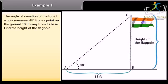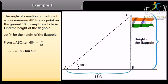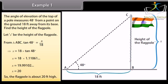Example 1: Let's solve some examples to understand better about angle of elevation and depression. The angle of elevation of the top of a pole measures 48 degrees from a point on the ground 18 feet away from its base. Find the height of the flagpole. Let's first visualize the situation. Let x be the height of the flagpole. From triangle ABC, tan 48 degrees equals x upon 18, which implies x equals 18 into tan 48 degrees, which equals 18 into 1.11061, which equals 19.99102, which equals 20. So, the flagpole is about 20 feet high.